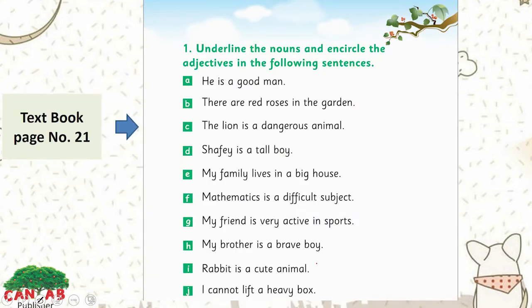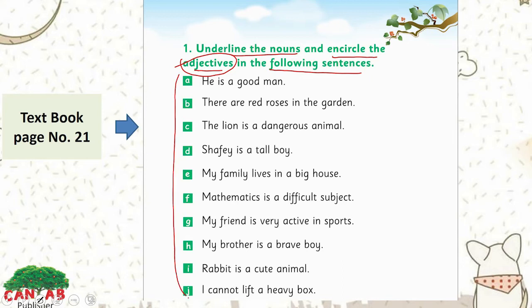On page number 21 of your textbook, we have an exercise: underline the nouns and encircle the adjectives in the following sentences. Remember, a noun names a person, place, or thing, and an adjective describes the quality, size, or color of a noun. Look at the first one: 'He is a good man.' The noun in this sentence is man, and good is the adjective — it describes the quality of the man.